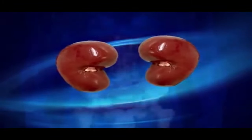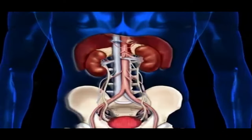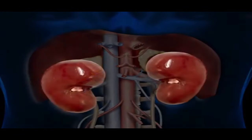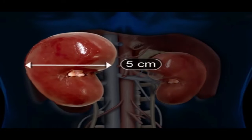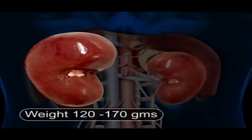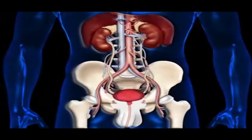The kidneys are a pair of bean-shaped organs that are part of the urinary system. Each kidney is about 10 cm long, 5 cm wide and 2-3 cm thick, weighing between 120 to 170 grams, and are situated below the diaphragm on either side of the vertebra.